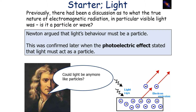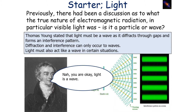Newton argued that light's behavior must indicate it's a particle, and this was confirmed later when the photoelectric effect stated that light must act as a particle. But Thomas Young stated that light must be a wave as it diffracts through gaps and forms an interference pattern, and diffraction and interference can only occur to waves, so light must be acting like a wave.